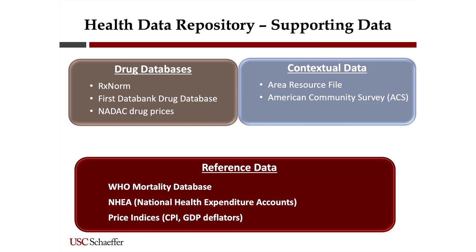We have contextual data. A lot of times we don't have many demographics about people in claims data, but sometimes we do have geography. One approach we use to estimate income or education is to take the zip code from Medicare data, get an average education for that zip code, and assign it to the person — giving a proxy for what their neighborhood looks like. Sources for that type of information are the area resource file, which is county level at most, and the American Community Survey, which you can get down to zip code in the five-year rolling average files, or even census tracts.